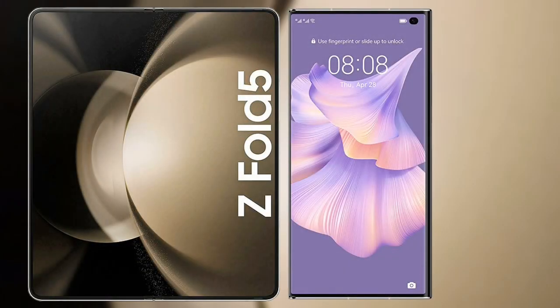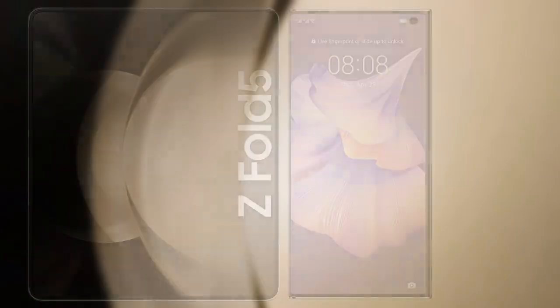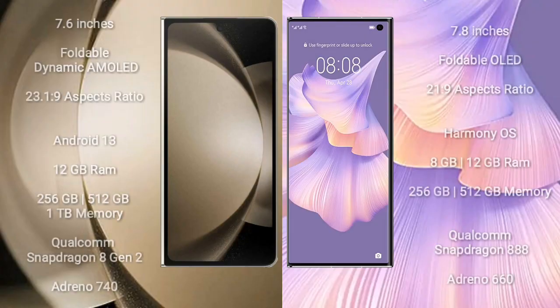I will compare the new Samsung Galaxy Z Fold 5 with Huawei Mate XS2. Samsung Galaxy Z Fold 5 comes with a 7.6-inch foldable dynamic AMOLED display. Huawei Mate XS2 comes with a 7.8-inch foldable OLED display.